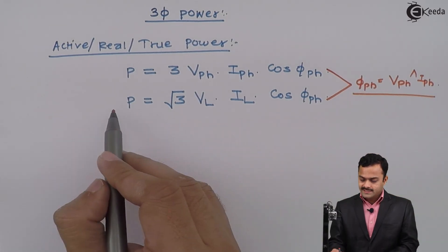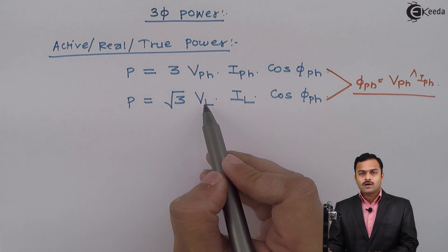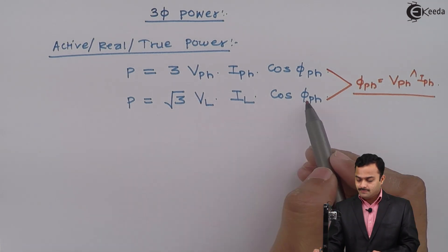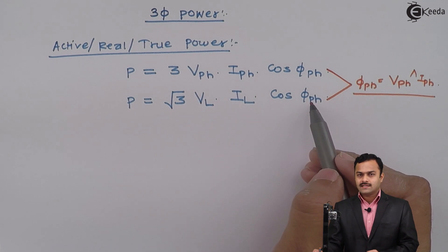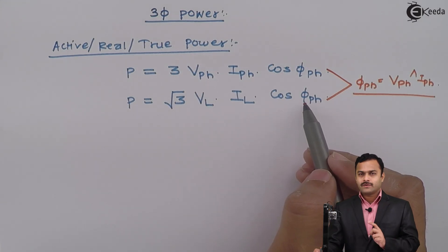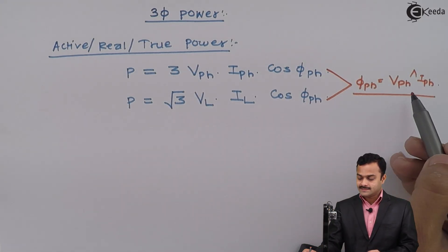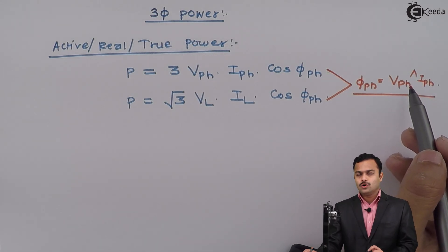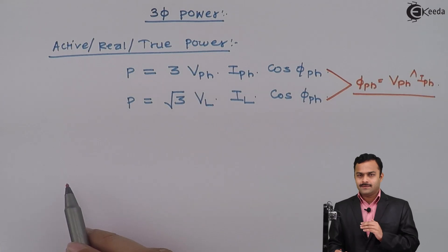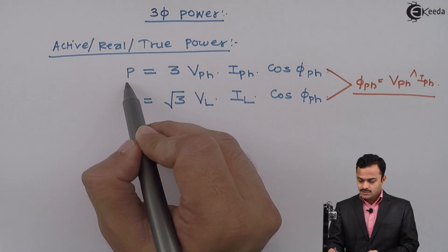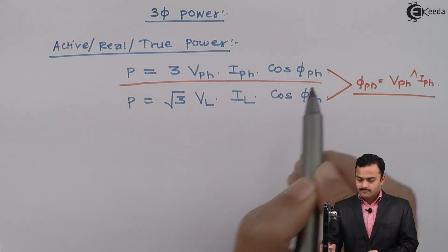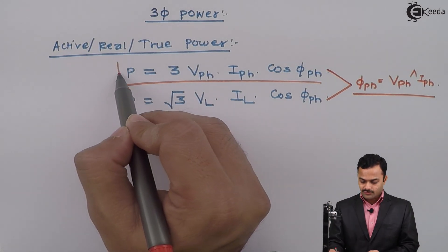φPH here as well as here is same and that is nothing but angle between VPH and IPH. The problem with this expression is here you are considering line quantities but whenever you consider angle that is not between VL and IL but it is between VPH and IPH. So any whichever way you should know where is the VPH and IPH in order to get φPH. So better we use this expression because here everything is a phase quantity.